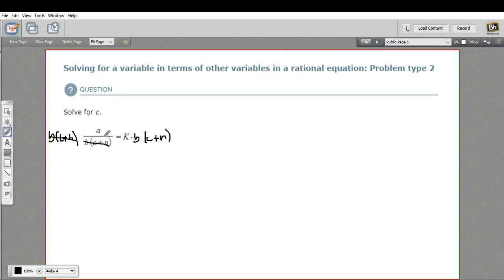So the left-hand side now is pretty simple. It's just a. Let me rewrite this whole thing. a on the left, and then k times b times c plus n.